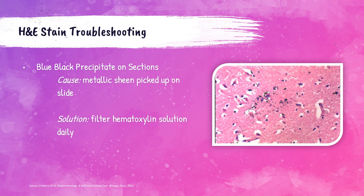Sometimes a blue-black precipitate can be found on the section — visible in this photo of brain tissue. This is caused by the metallic sheen precipitate that forms in many hematoxylin solutions being picked up and deposited onto the slide. This can be prevented by filtering the hematoxylin solution daily.